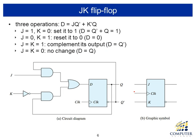Another type of flip-flop is the JK flip-flop. The graphic symbol for the JK flip-flop has two inputs J and K, a clock input, and two outputs Q and Q-bar. Q and Q-bar are complementary to each other, so logically this is just one output.